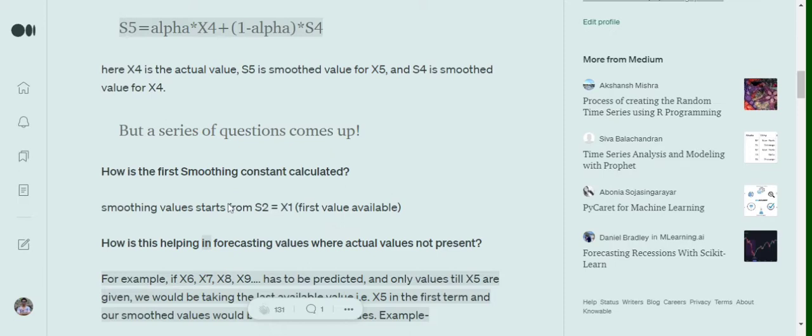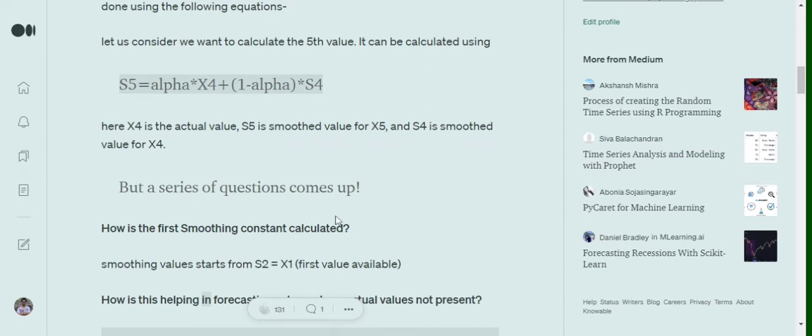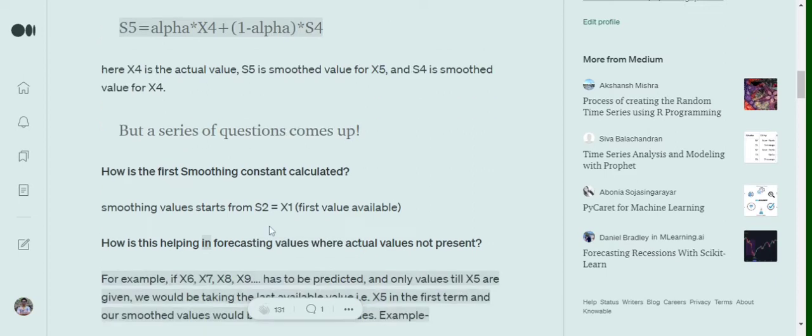Now there should be a question: how should we be calculating S1? Because as you saw, the timestamp considered is t-1 when we are calculating for t. So for S1, we won't have any S0 term. So how to calculate that? In that case, we will be considering S2 equals to X1.